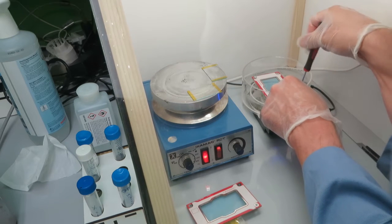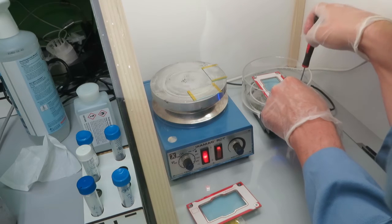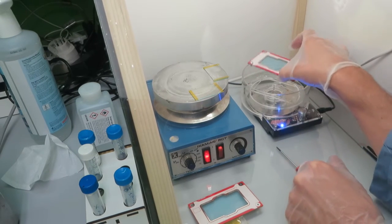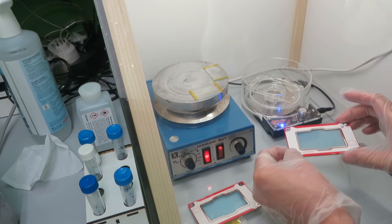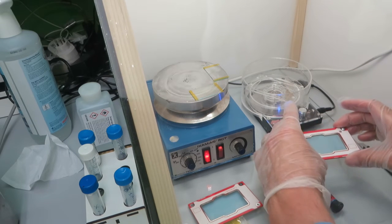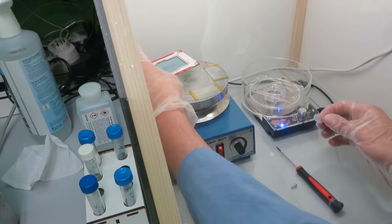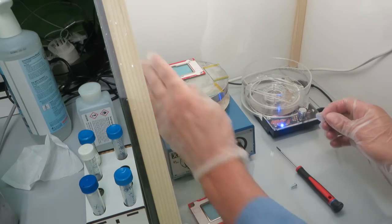Then I remove it and put the carrier back to the hot plate. On the hot plate, I first cure it at 80 degrees for about 20 minutes and then increase the temperature to 150 degrees.